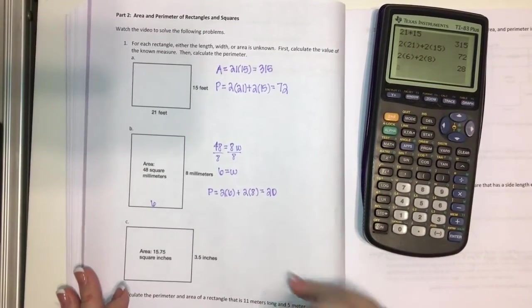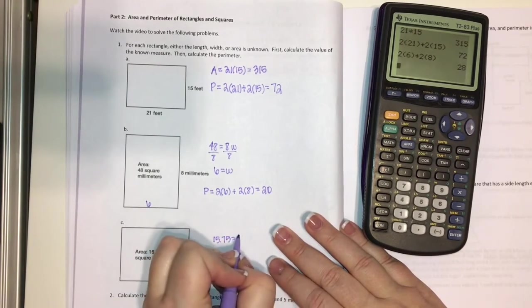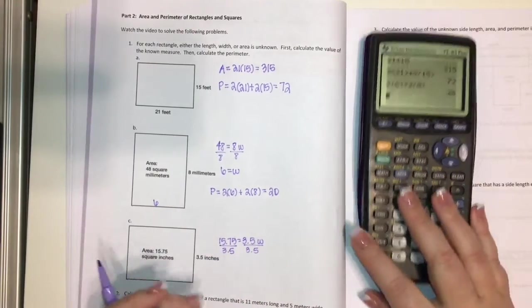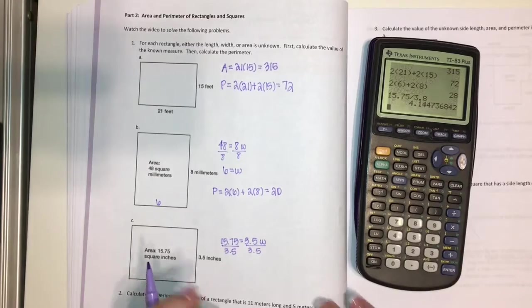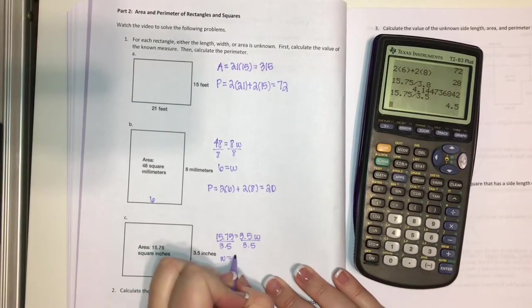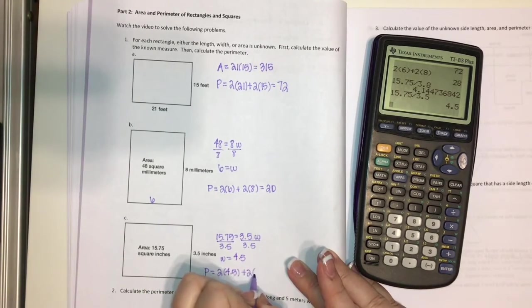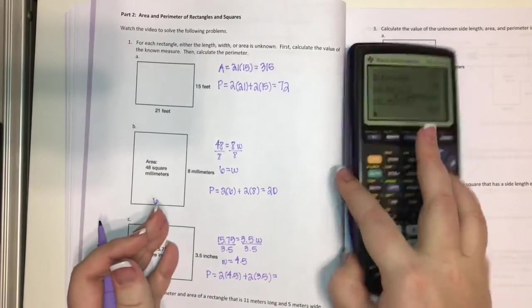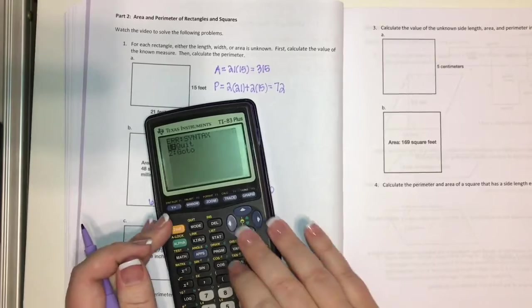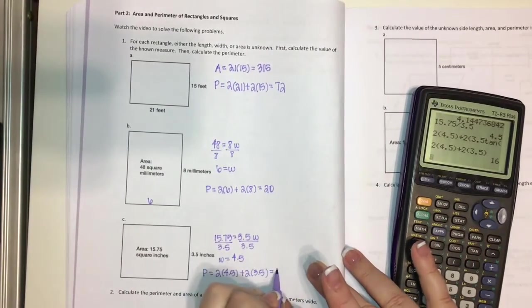This last part of the first problem, again, they gave me the area, it's 15.75. And that equals 3.5 times our width. So again, we're going to have to divide. And 15.75 divided by 3.5 gives me, I did not type that in right, gives me 4.5. So my width is 4.5. Now to find my perimeter, we'll do 2 times 4.5 plus 2 times 3.5. Let's see, got to make sure you are putting in the right things here. We get 16. So our perimeter would be 16.